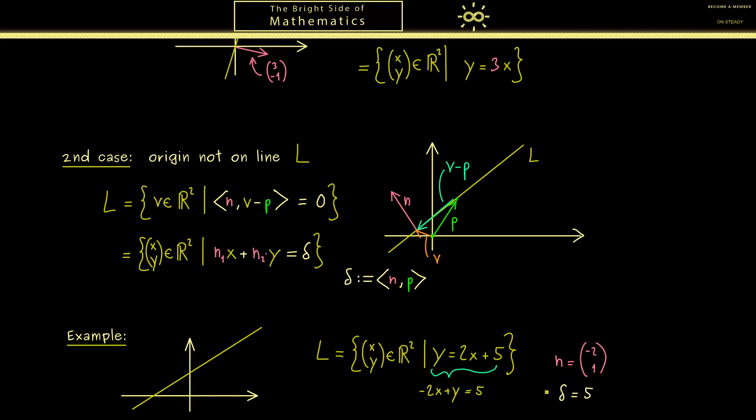Also delta should be 5, but now we can sketch the normal vector here. So when we put it on a line, it should roughly look like this. Ok, there we have it. Now I would say you know how to use normal vectors to describe lines in the plane.